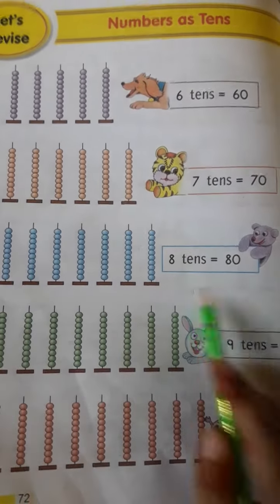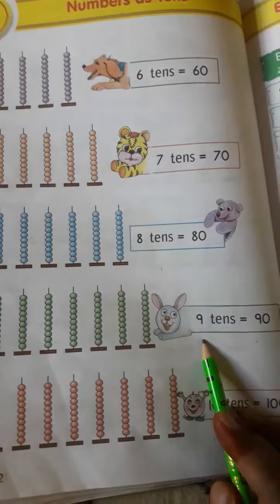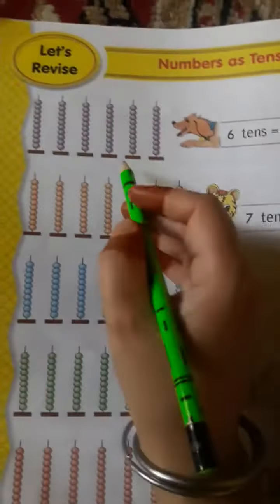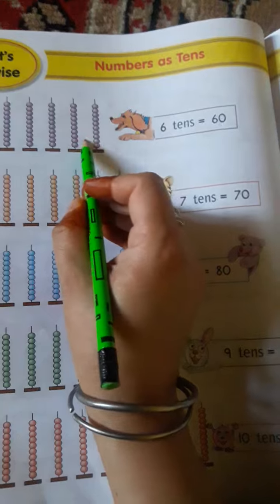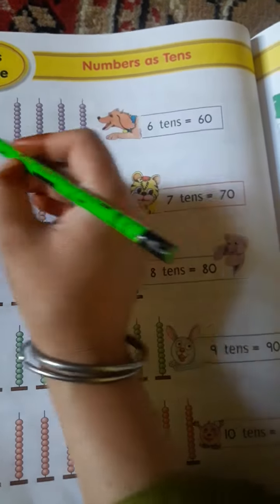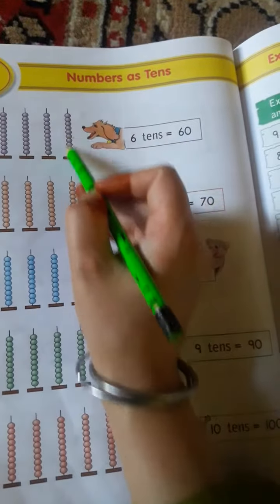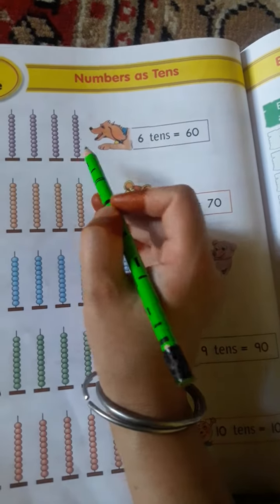8 tens means 80, 9 tens means 90, and 10 tens means 100. Here they have made 60 circles, but they have written 1, 2, 3, 4, 5, and 6. They have written 10 circles in each group, that means 6 tens. 6 tens equal to 60.